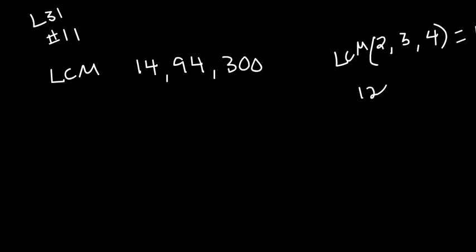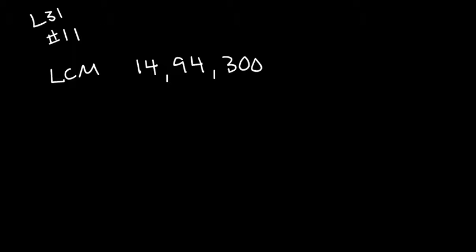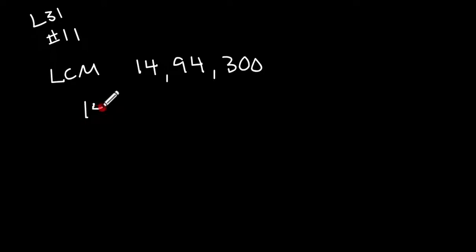Now when it comes to these bigger numbers like 14, 94, and 300, you can't just look at it and figure it out. So what we're going to do is make the factor trees — we're going to prime factor these numbers using your division or however you do prime factorization.